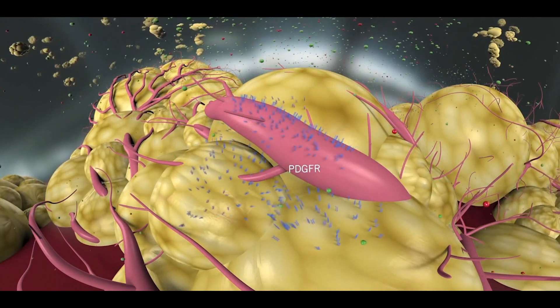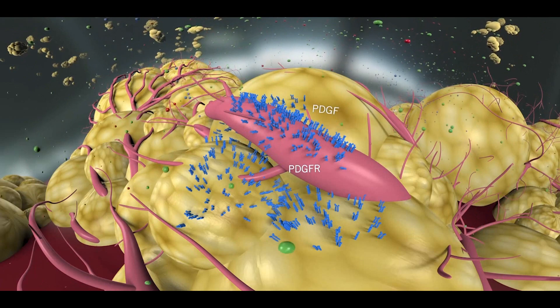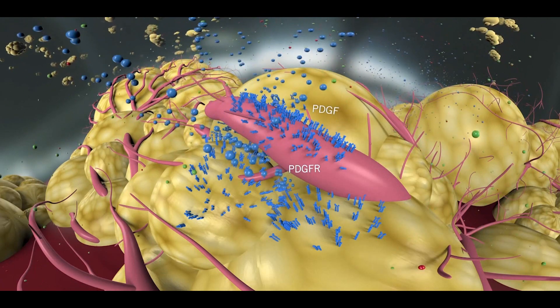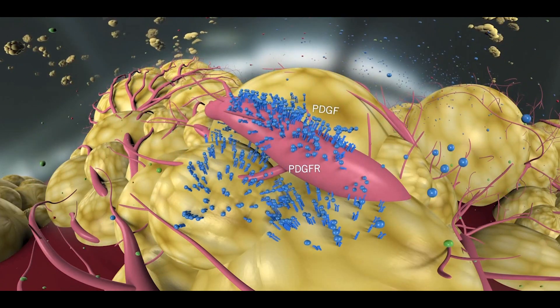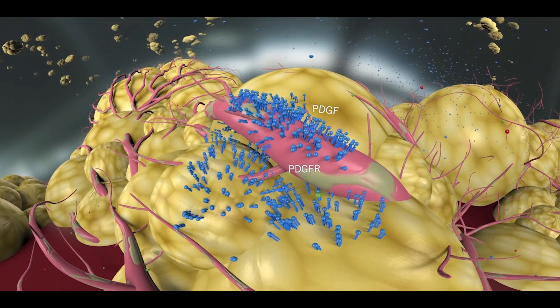Another angiogenic factor, platelet-derived growth factor, is required for the recruitment of smooth muscle cells and pericytes that surround and support new blood vessels.